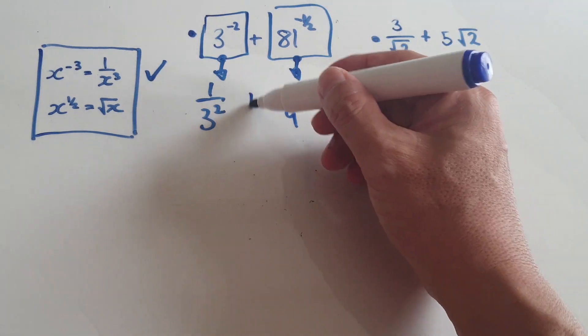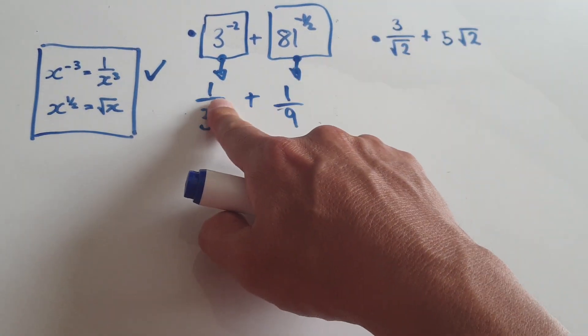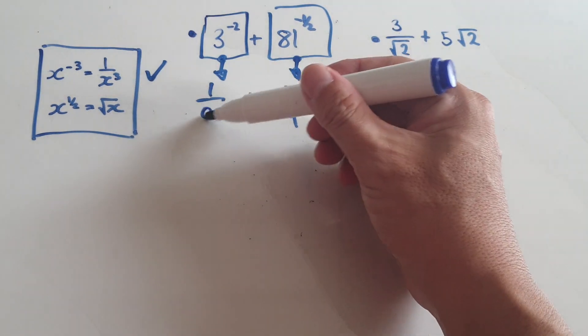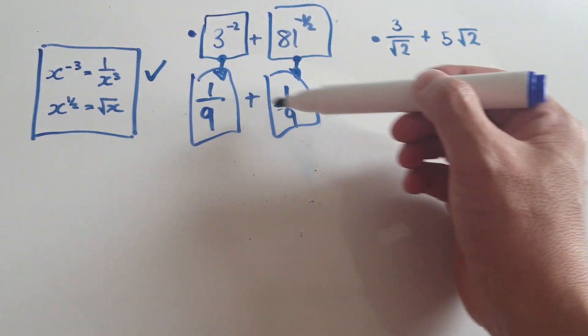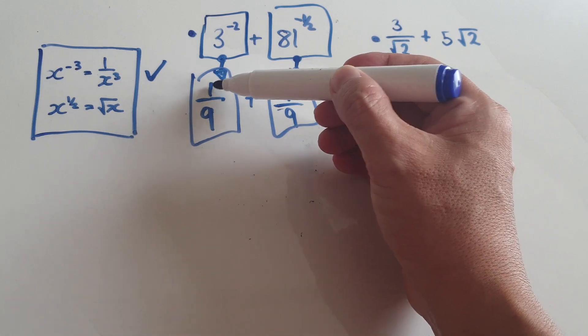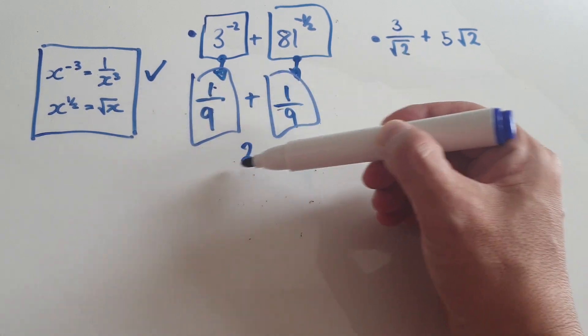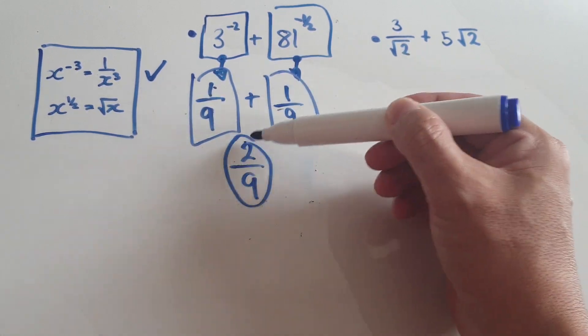Now let's tidy this up. 3 squared is 9. Oh, what a coincidence. The two denominators are the same, so we can just immediately add up these two fractions. Top plus top, that would be 2 over 9. This is your final answer for this.